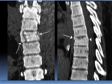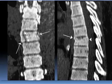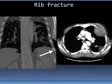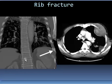This is coronal and sagittal reconstruction for a vertebral fracture — a compression fracture. And this is hematoma around the rib and lung contusion. Here in the bone window there is a fractured rib.